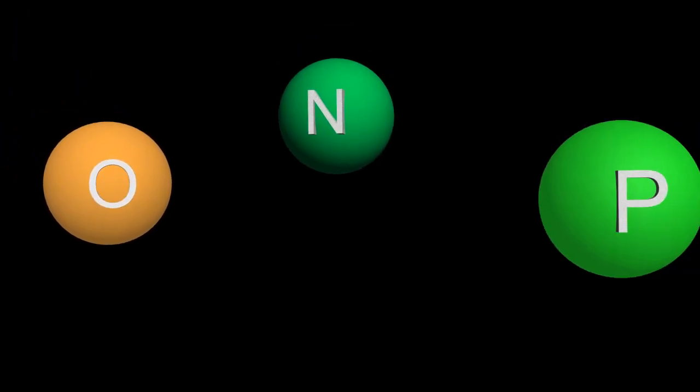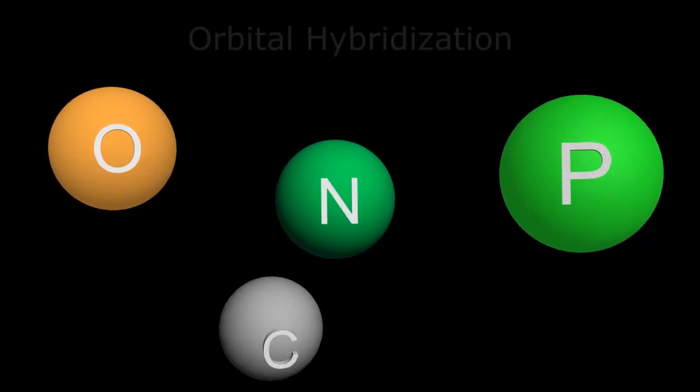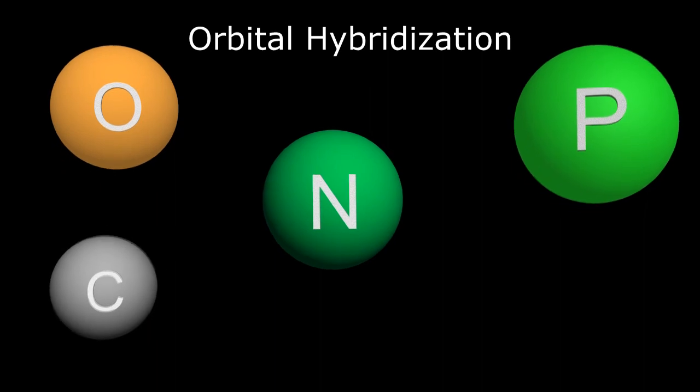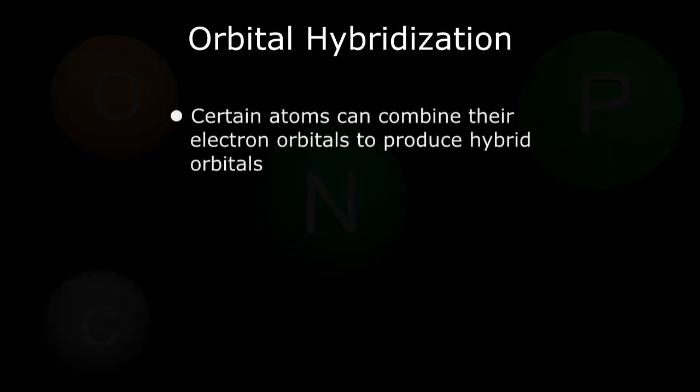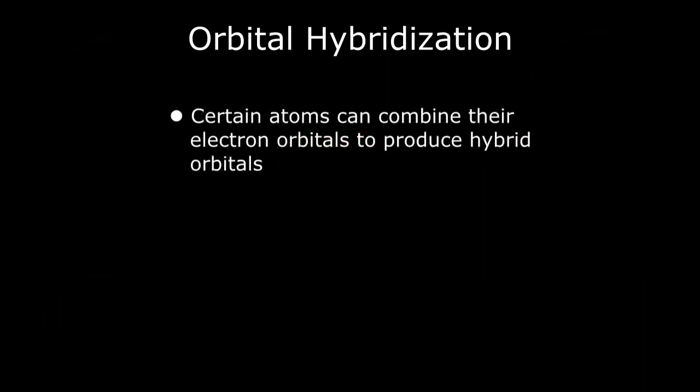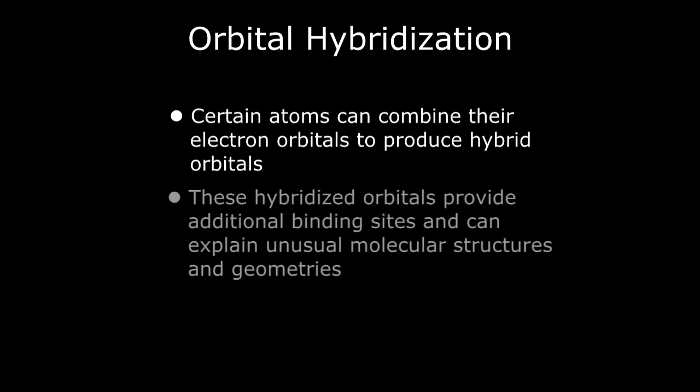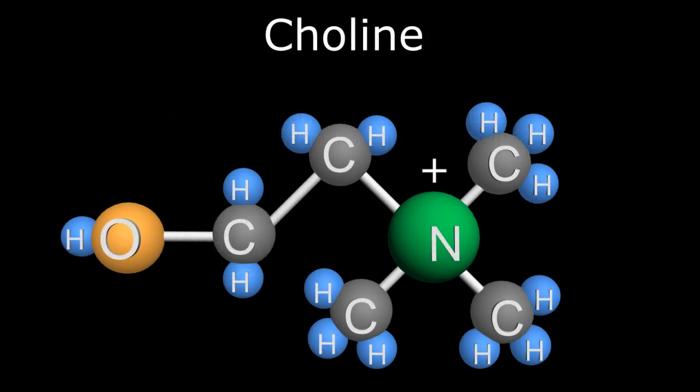Hey guys, in today's video I want to talk about the ability of certain elements to undergo orbital hybridization. This is basically the ability of certain atoms to combine their electron orbitals to produce hybrid orbitals. These hybridized orbitals provide additional binding sites and can explain unusual molecular structures and geometries that wouldn't be possible with standard chemical properties.